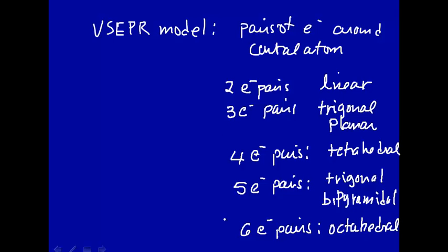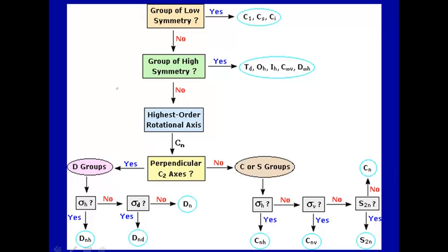Depending on the number of electron pairs around a central atom, the electron pairs are arranged accordingly. To get the structure of the molecule, you have to figure out which electron pairs are involved in bonding to other atoms and which are not, because the structure of the molecule is determined by where the atoms are. You can use a VSEPR model, determine it experimentally, or look it up.